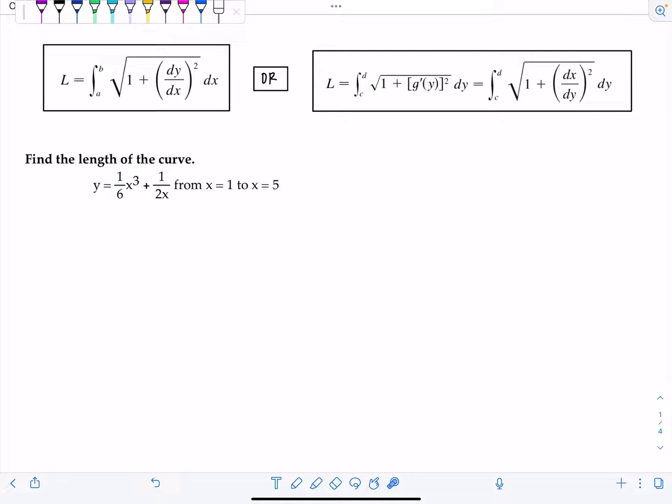If your curve is a function of y then you just have g prime of y squared and you'll integrate with respect to y. We call it c to d instead of a to b. If you want a full lecture showing where the formula comes from I'll link it here. But I'm just going to jump into some examples right now.